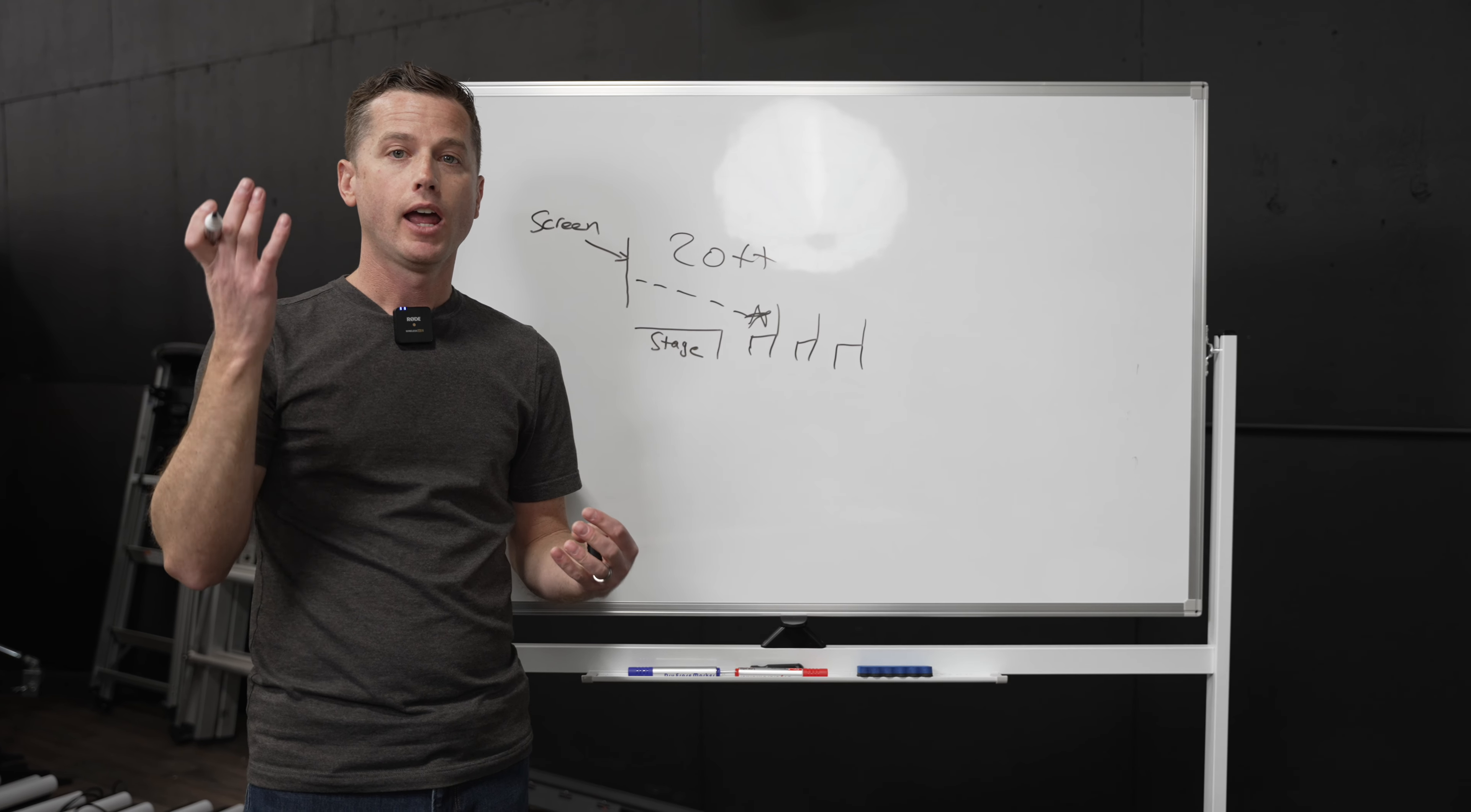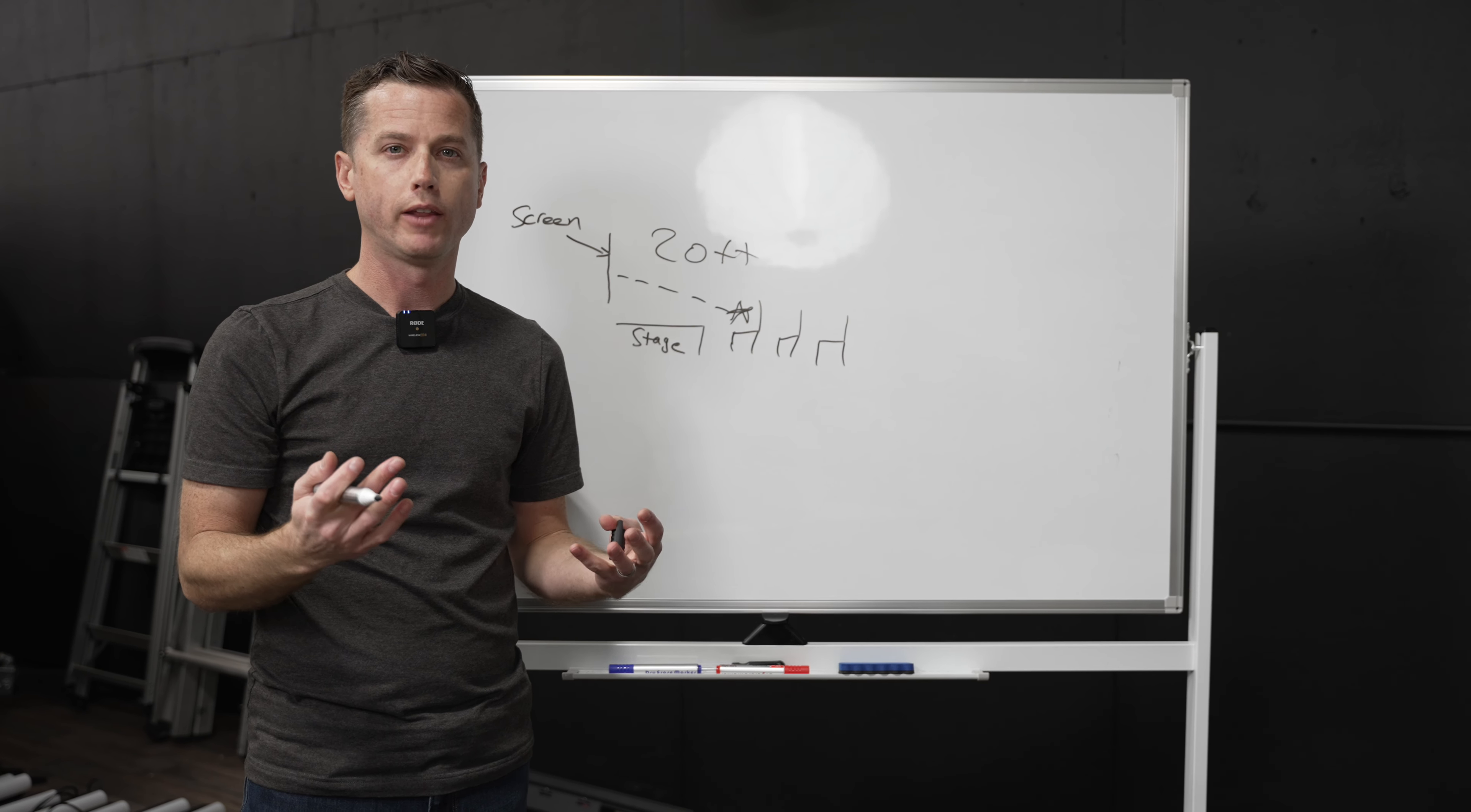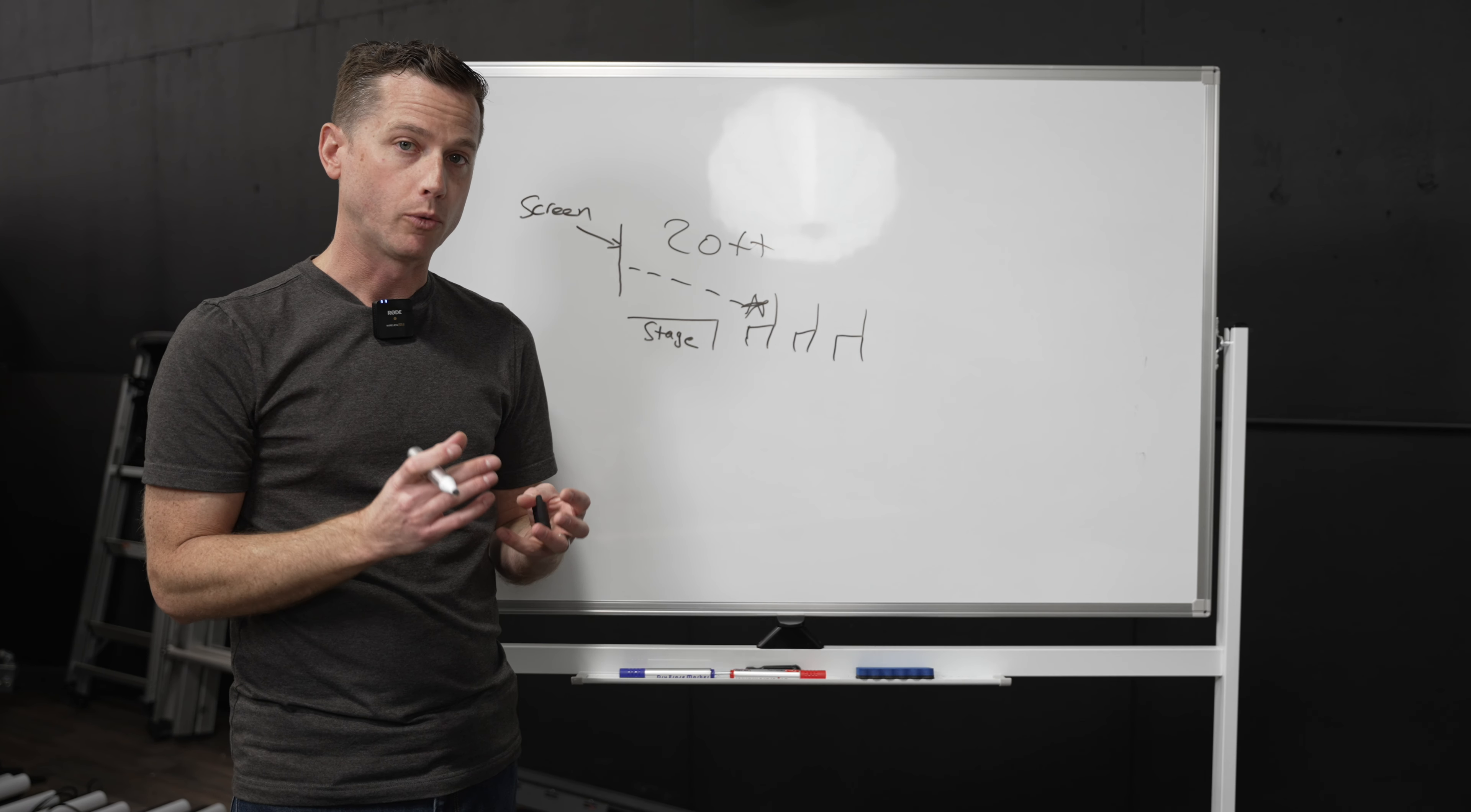If we went with a 3.91 in this application, these first few rows will be able to distinguish the individual pixels on the screen. Therefore they would see some distortion or just not as smooth of an image as you would see if it was a tighter or smaller pixel pitch.